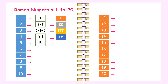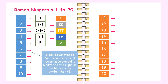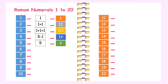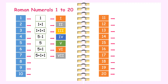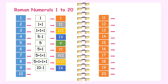5 is written as V. 6 is written as 5 plus 1, so as per Rule 3 the lower value symbol is written to the right: VI. 7 is written as VII (5 plus 1 plus 1). 8 is written as VIII (5 plus 1 plus 1 plus 1). 9 is written as IX (10 minus 1). 10 is written as X.